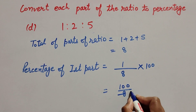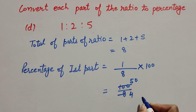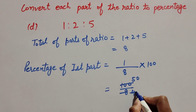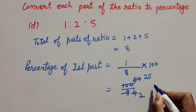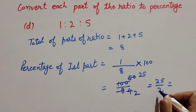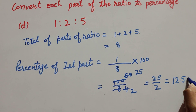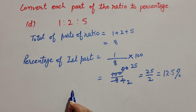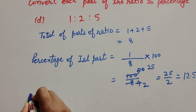Now one hundred and eight are both divisible by two, so we cancel them: two fours are eight, fifty twos are one hundred. Then twenty five over two — both again divisible by two — gives us twenty five over two. Twenty five divided by two equals twelve point five percent. So the percentage of the first part equals twelve point five percent.